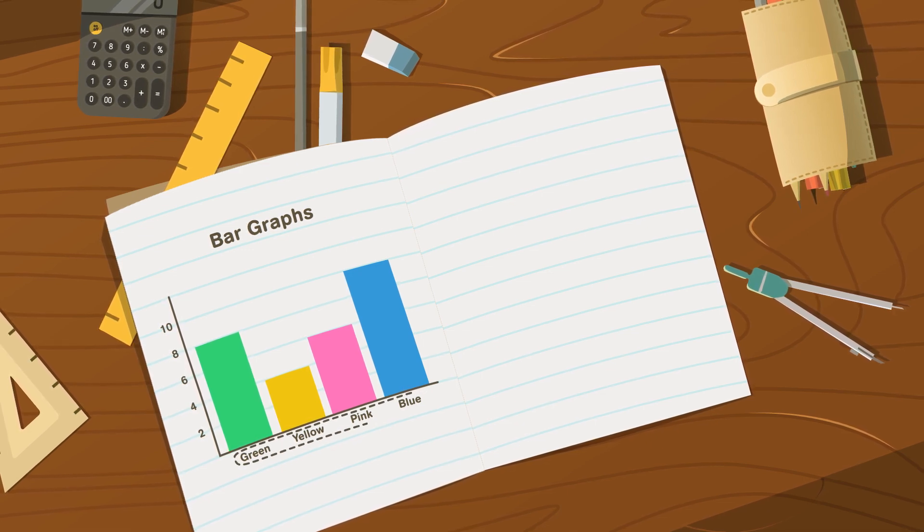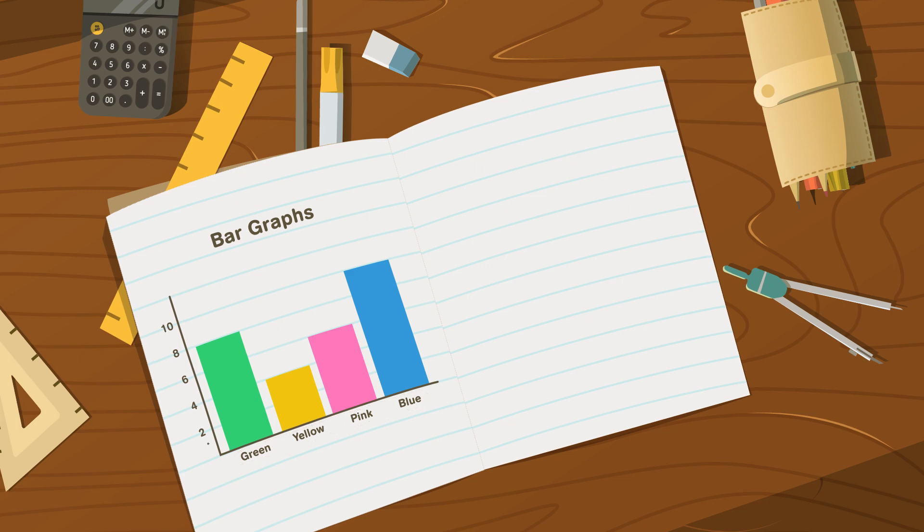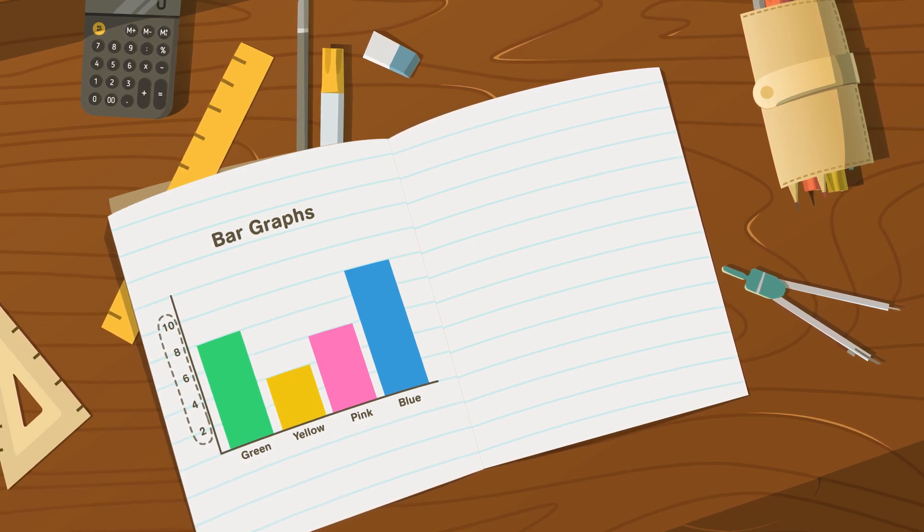This side tells you the categories. This side tells you how much belongs in each category.